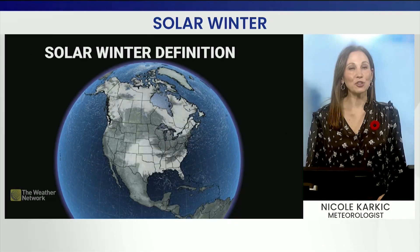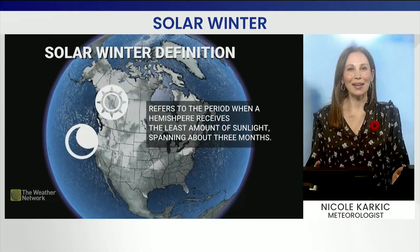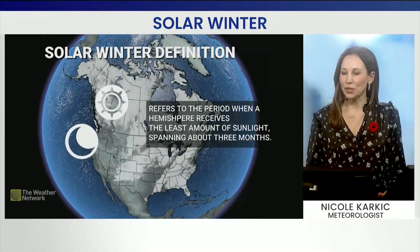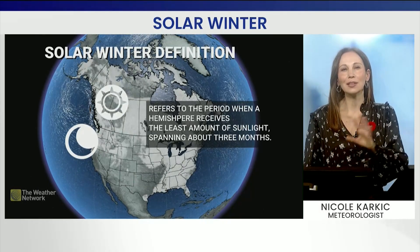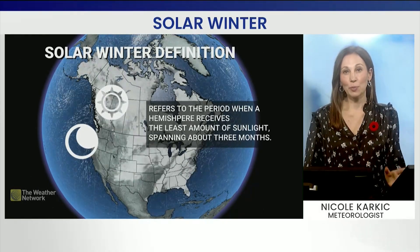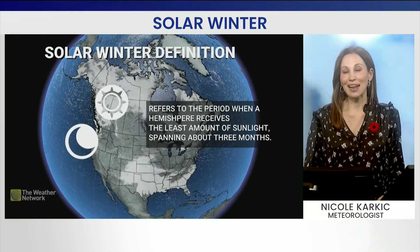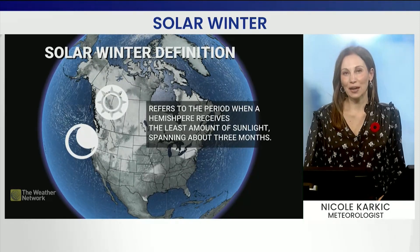We have officially entered solar winter. What is that? It refers to the period when a hemisphere receives the least amount of sunlight, and it spans about three months. And it has nothing to do with the time change.